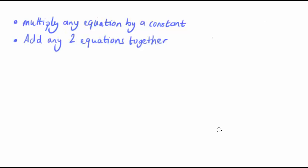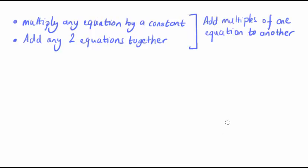We only used two operations here. And those were to multiply any equation by a constant and to add any two equations together. We were also able to combine these two operations into a single step, which is to add multiples of one equation to another.